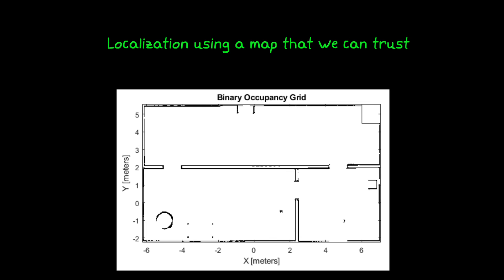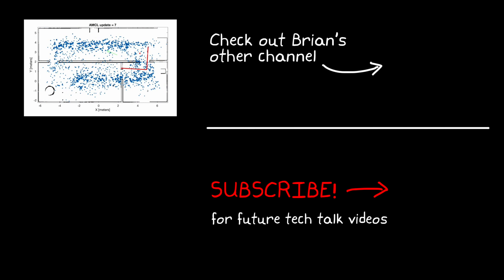In this video, we really only looked at localization assuming we already had a map that we could trust. But what if that's not the case? What if we don't have a map, or if the environment is constantly changing? Well, in the next video, we're going to look at the SLAM problem that is simultaneously doing localization and mapping. So if you don't want to miss that or any other future Tech Talk videos, don't forget to subscribe to this channel. And if you want to check out my channel, Control System Lectures, I cover more control theory topics there as well. Thanks for watching and I'll see you next time.